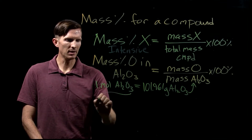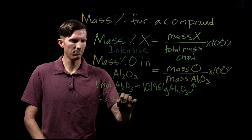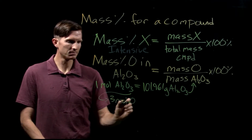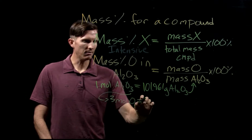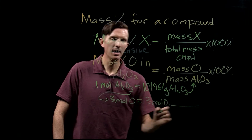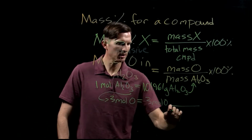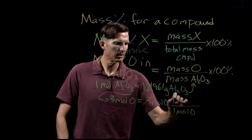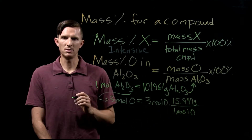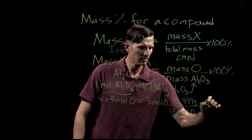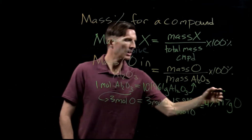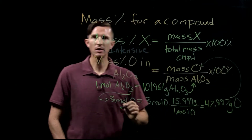Now I want to find the mass of oxygen. In aluminum oxide I have three moles of oxygen. I can find the mass of oxygen by taking three moles of oxygen and multiplying by the molar mass of oxygen — 15.999 grams per mole — giving us 47.997 grams of oxygen. That is the mass of oxygen that we have.